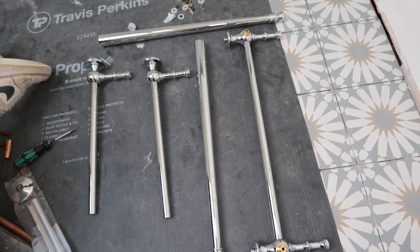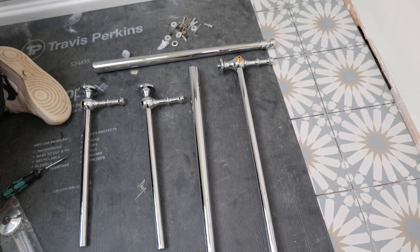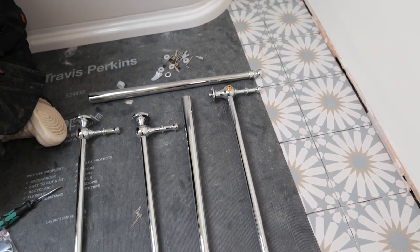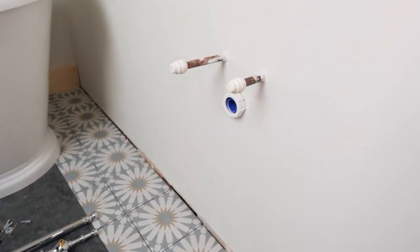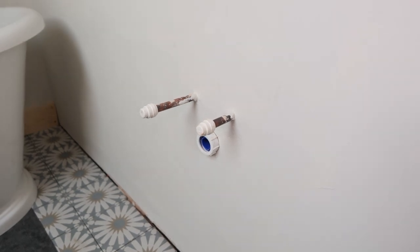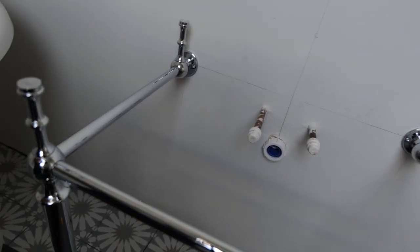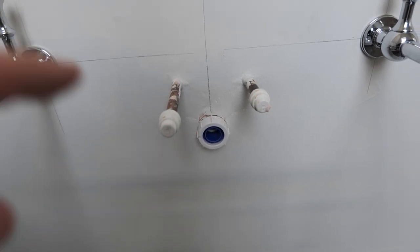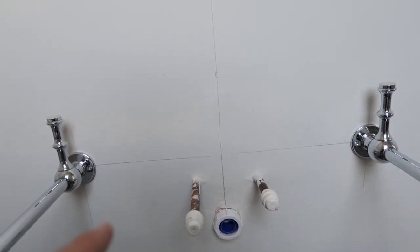I've got all the components together for the chrome cradle that's going to be supporting the Burlington sink. I just need to get this built and then I can offer it up to the wall, get it centered, and then get it secured to the wall. I've got the cradle mounted now, and what I've done is I've actually put the level across the chrome legs just to make sure the fixings on the back wall are totally straight. It also means that the sink's going to be level when I'm finished.